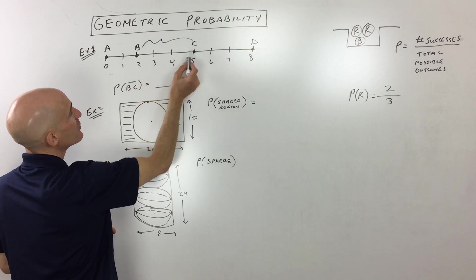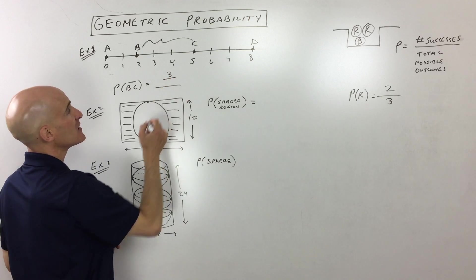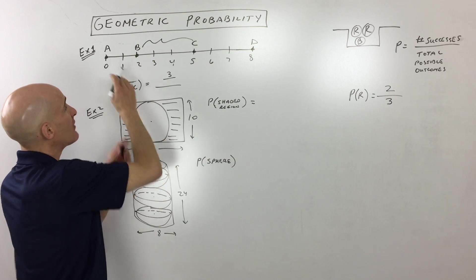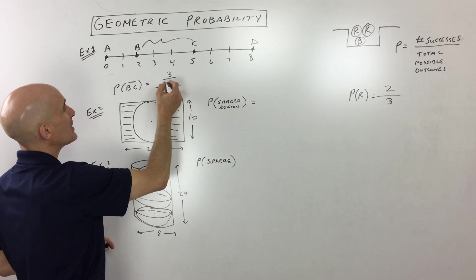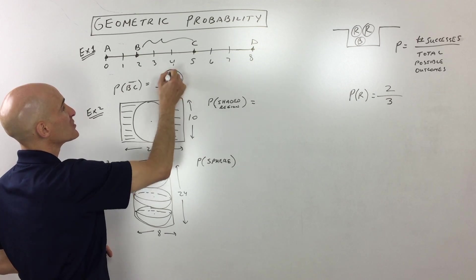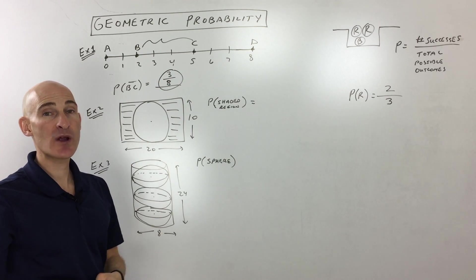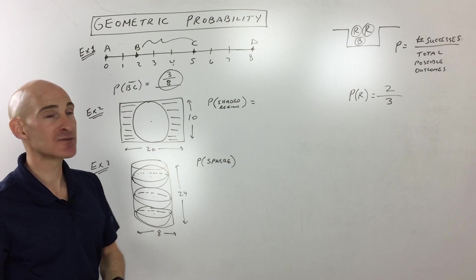So in this case, you can see it's one, two, three, so three units, divided by a total length of eight units. So our probability is going to be three-eighths. And you can write probability as a fraction or a decimal.